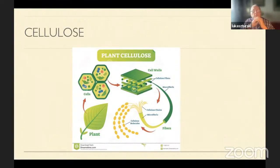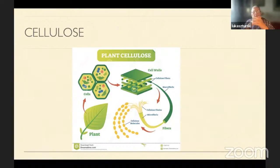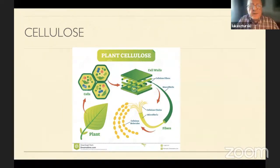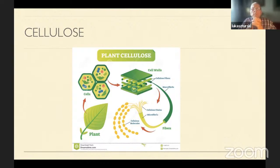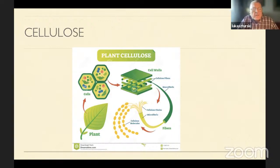The end of the 19th century is the time when completely new materials were invented and became available for all sorts of possible applications. Those materials are today called plastics. Probably the first material which can be called plastic in the contemporary sense was a material made out of cellulose.